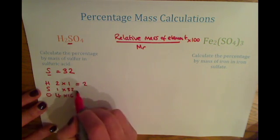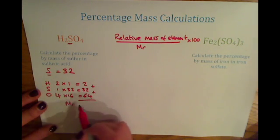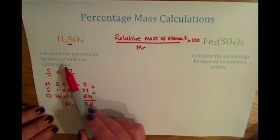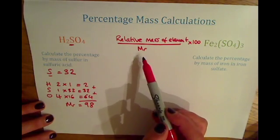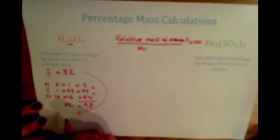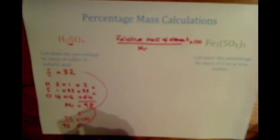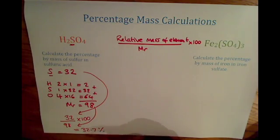If we add all of those up, we find the Mr of H₂SO₄ is 98. We've been asked to calculate the percentage by mass of sulfur in H₂SO₄, so we do the mass of sulfur divided by the relative formula mass times by 100: 32 divided by 98 times 100 equals 32.7%. So in H₂SO₄, there is 32.7% sulfur.